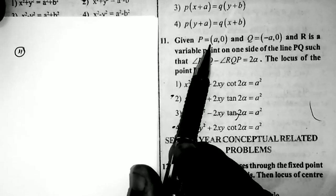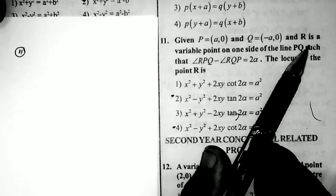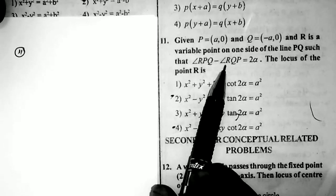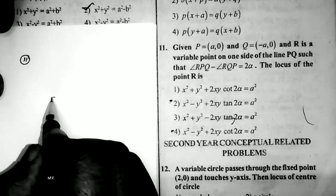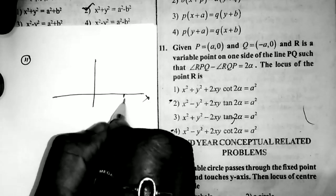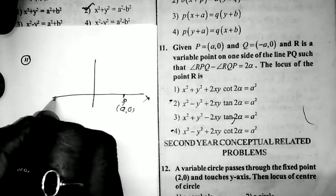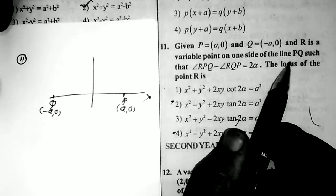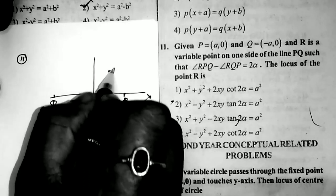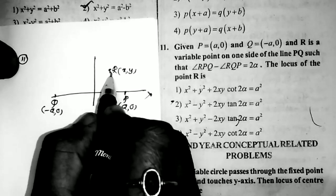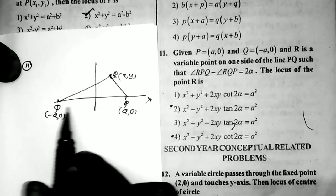Problem 11: P = (a, 0), Q = (-a, 0), and R is a variable point on one side of line PQ such that angle RPQ - angle RQP = 2α. Find the locus of R. From the diagram, R = (x, y). The x-axis passes through P and Q. The length from the origin to P is a, and the length from origin to Q is also a.